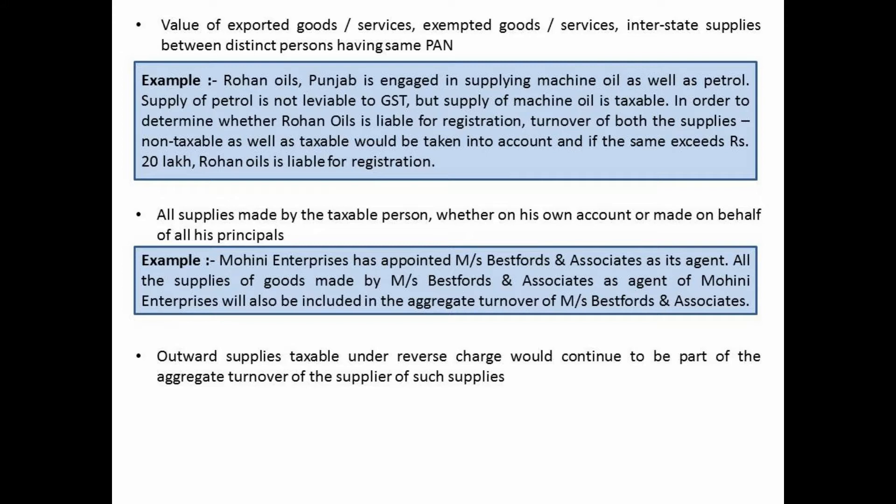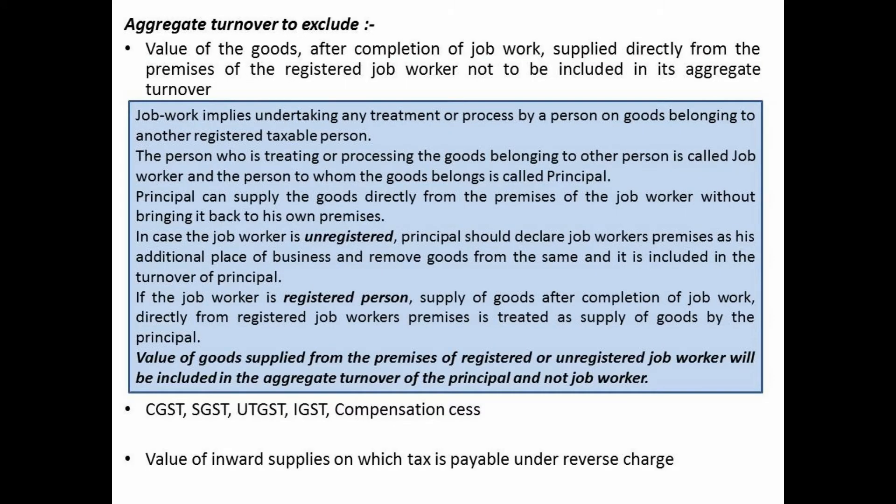All supplies made by a taxable person, whether on his own account or on behalf of all his principals, are included. For example, if Mohini Enterprises appoints Best Ford as its agent, all supplies of goods made by Best Ford as agent will be included in Best Ford's turnover. If an outward supply is taxable under reverse charge, that supply counts in the turnover of the person who made the outward supply — not the person liable to pay tax under reverse charge.